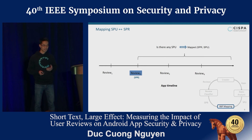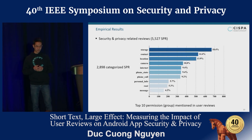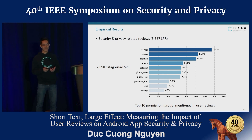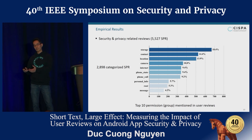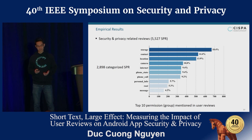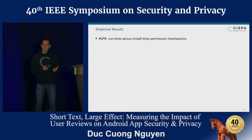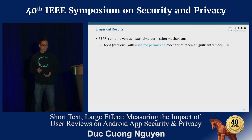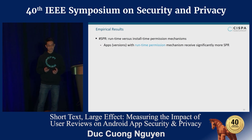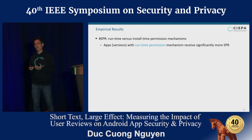Now let's look at our empirical results. Using our classifier, we identified 5,527 SPR, and around 50% of them could be categorized into subcategories using keywords. The top 10 permissions mentioned in user reviews are headed by storage, contact, location, camera, and so on. Regarding runtime permission, we compared the amount of SPR for app versions with runtime permission versus install-time permission, and found that app versions with runtime permission receive significantly more SPR. This is correlated with the introduction of the runtime permission mechanism — as apps switched from install-time to runtime permission, the amount of SPR increased.